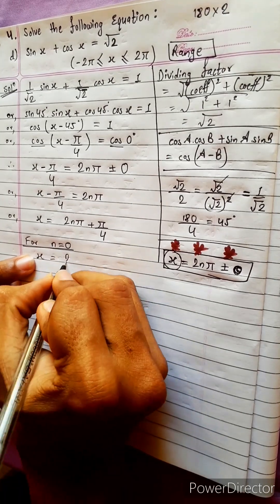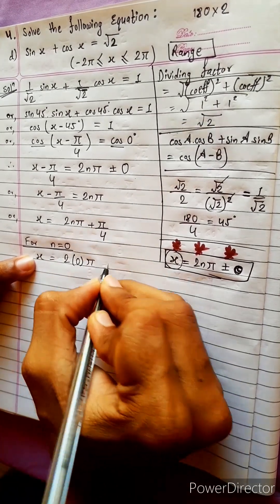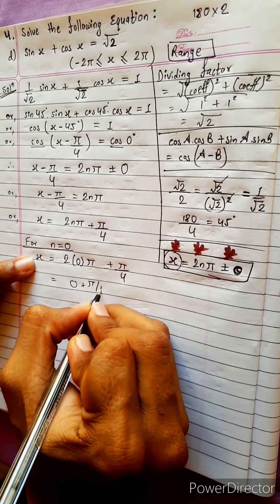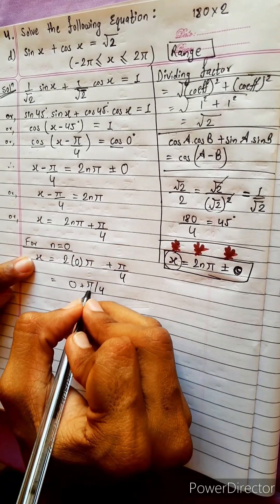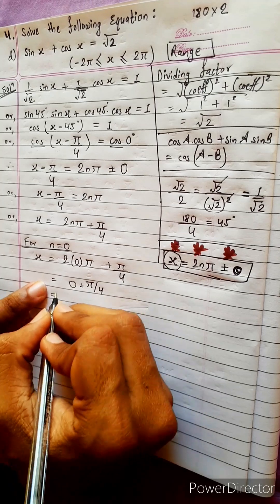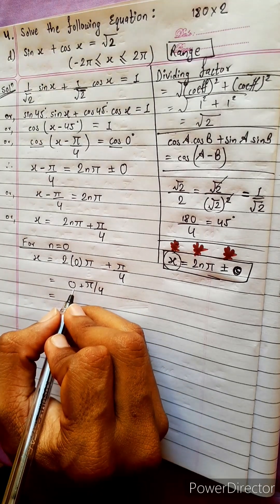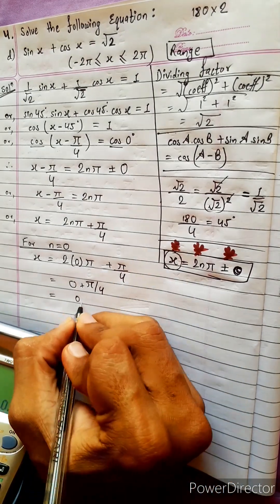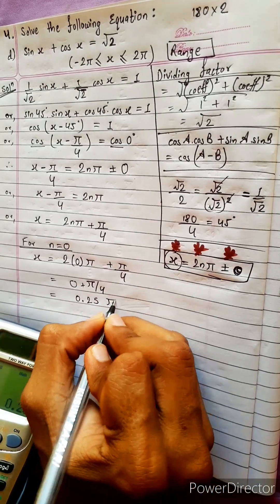x equals to how much? 2 into 0 pi plus pi by 4. It is 0 plus pi by 4. Does this belong to this range? I hope so. It belongs, because pi by 4 means 1 by 4 into pi, 0.25, 0.25 pi.